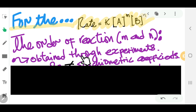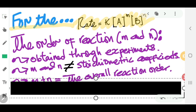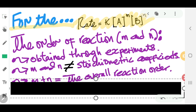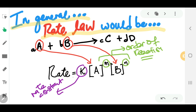These numbers — M and N — will be obtained through a series of experiments. Therefore, you cannot regard the stoichiometric coefficients as M and N.